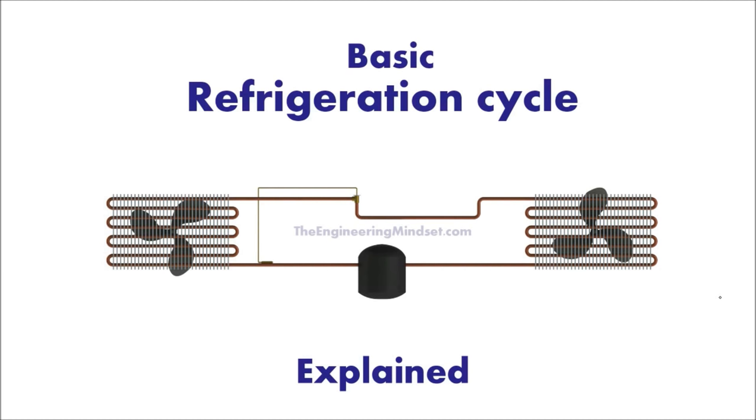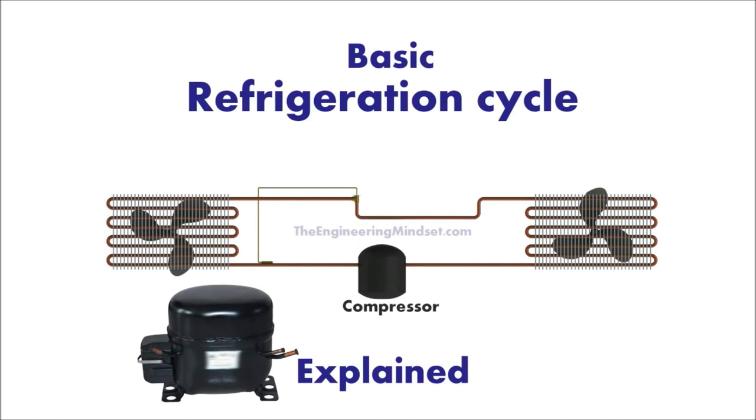So the four main components we've got in the refrigeration system, these are essential. It has to be in every system for it to work. The first component is the compressor. And a real life compressor will look a bit like this one. You see that on the back of fridges or if you've had the chance to look inside the split AC unit, that'll be one of them.